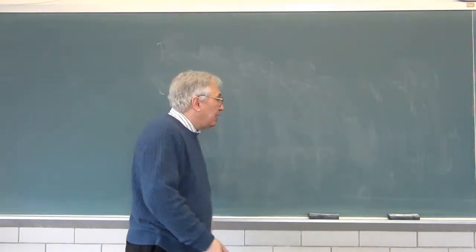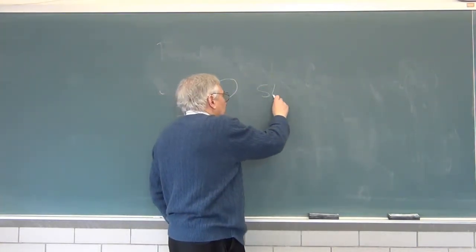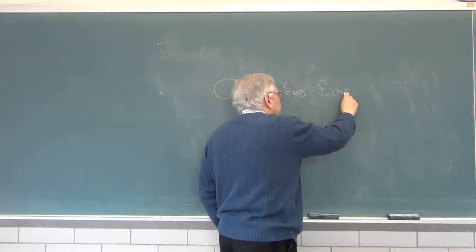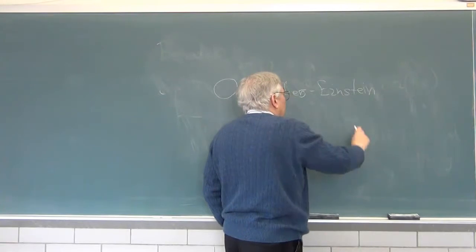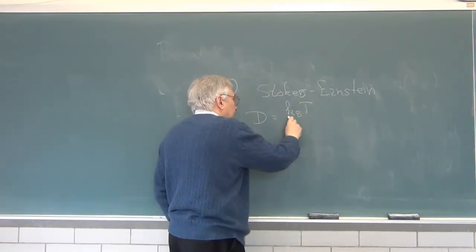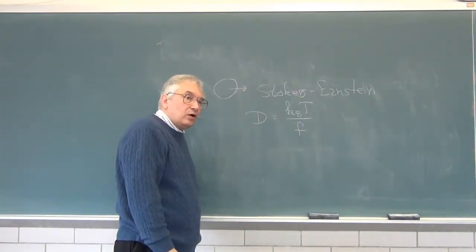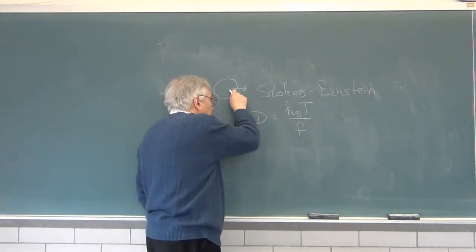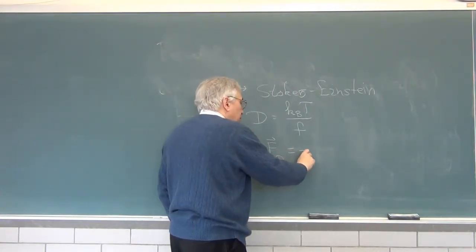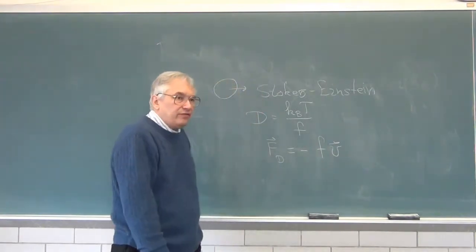Now, for an isolated sphere in water, there is a result due to Stokes and Einstein. What Einstein said was the diffusion coefficient D equals the thermal energy, kt, over a drag coefficient, F, that resists the motion. If I pull the sphere through water at some speed, there is a drag force on the sphere, which points backwards to the direction of the velocity.